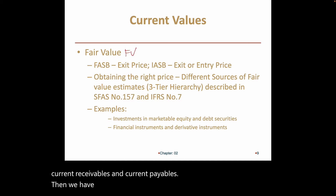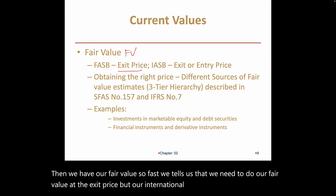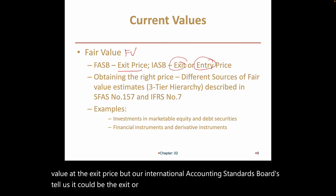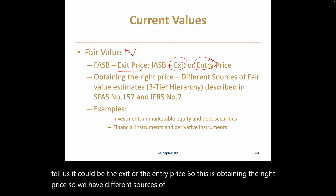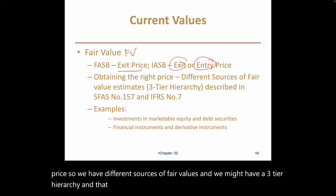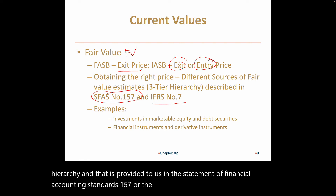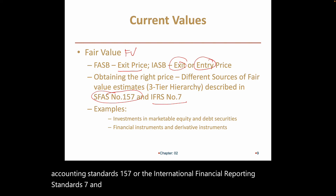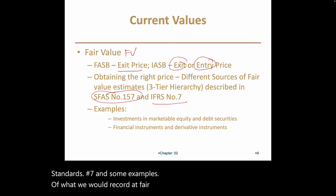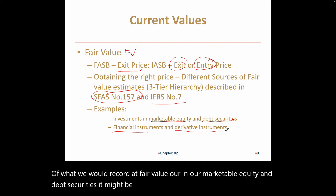For fair value, FASB requires the exit price, while the International Accounting Standards Board allows either the exit or the entry price. Different sources of fair values form a three-tier hierarchy, provided in SFAS Number 157 or IFRS Number 7. Examples of assets recorded at fair value include investments in marketable equity and debt securities, financial instruments, and derivative instruments.